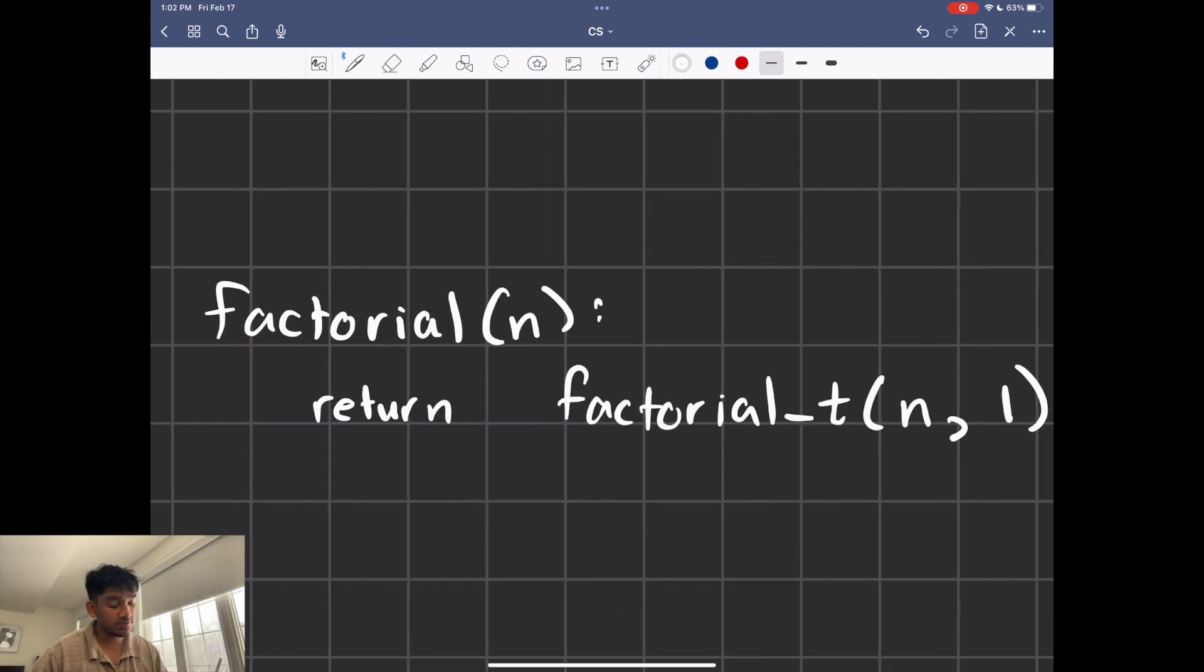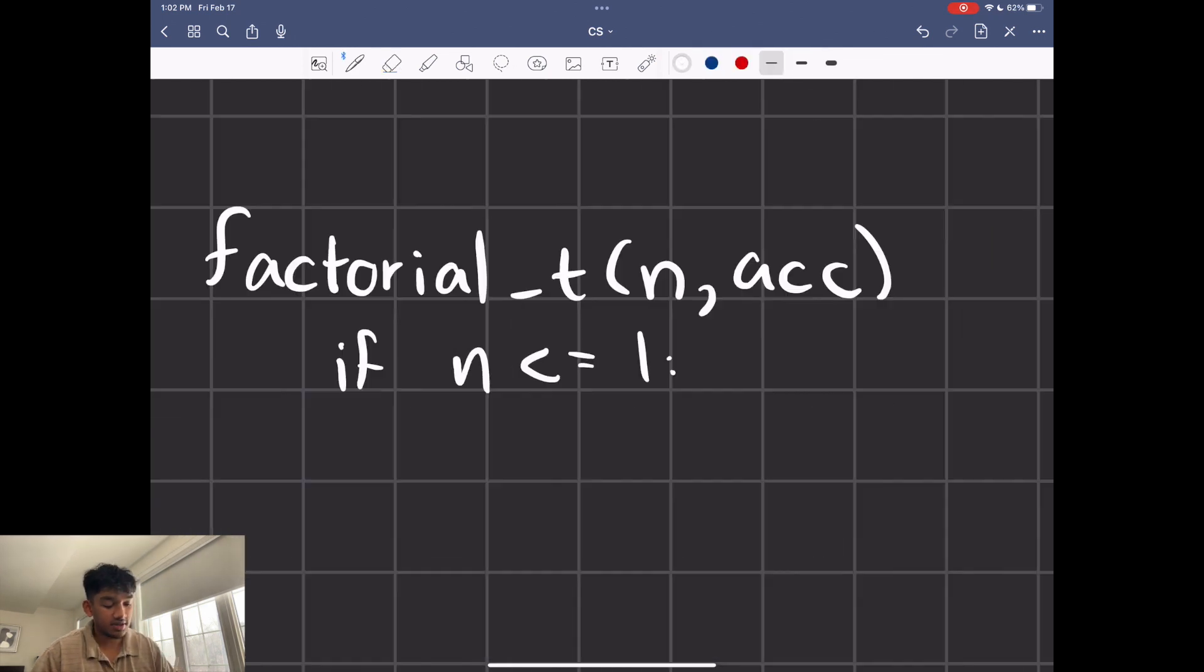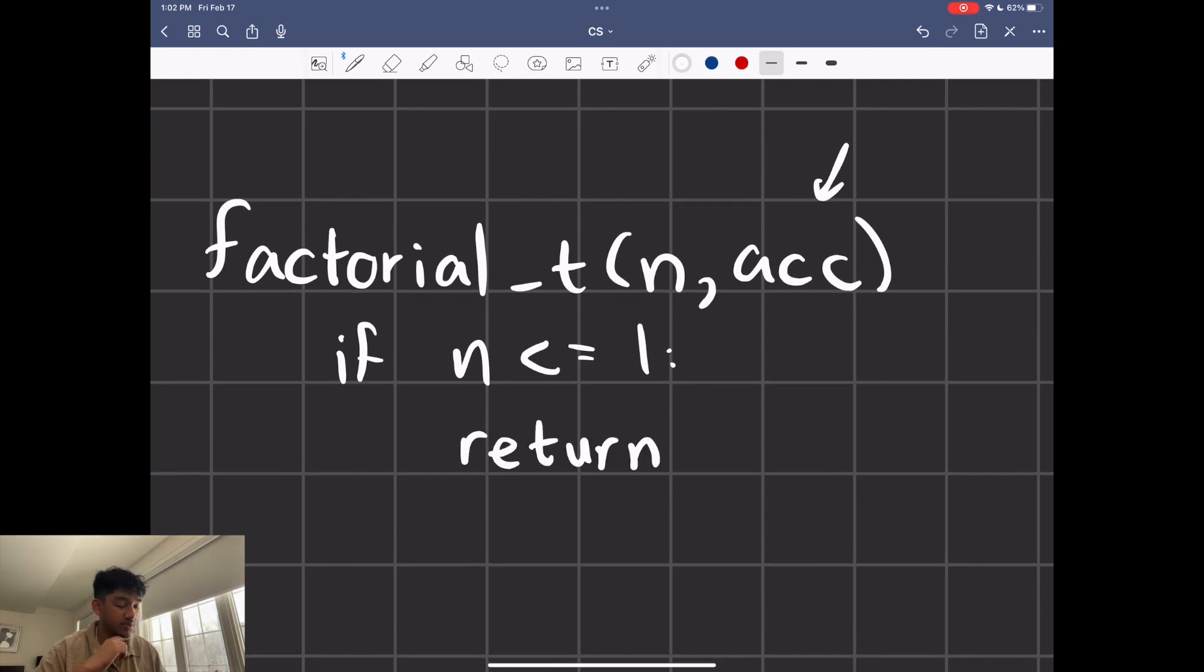So I'm making a new function called factorial_t, a helper function. t is short for tail recursion. And I have this other parameter here. I'm going to call that acc for accumulator. So let's write our function. Now that we have an accumulator, you're going to see that when we return, in the other case, what we did was we just returned 1. But now we're just going to return the accumulator.